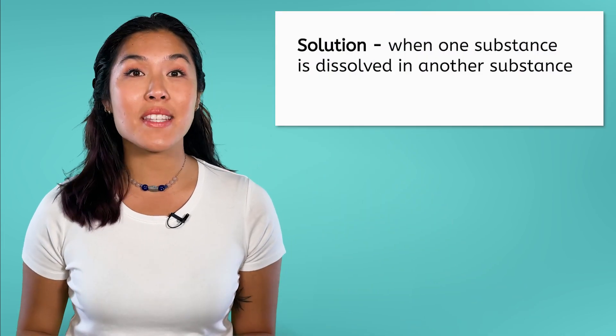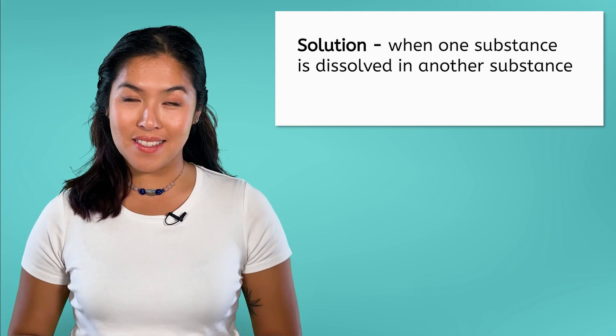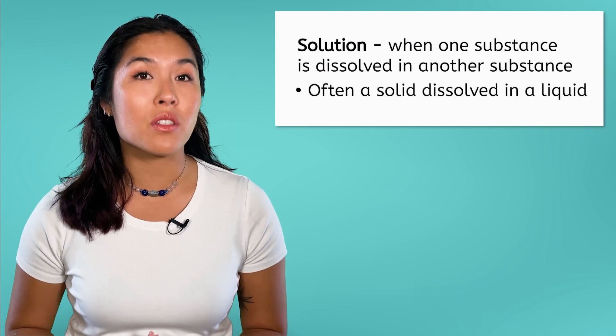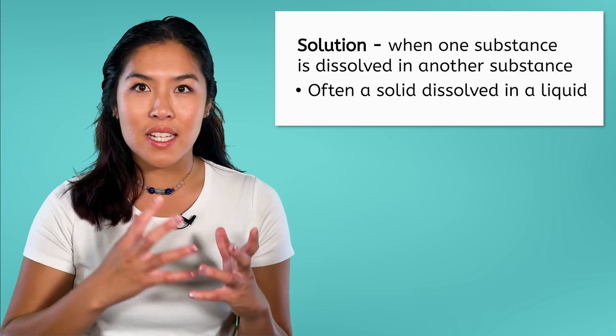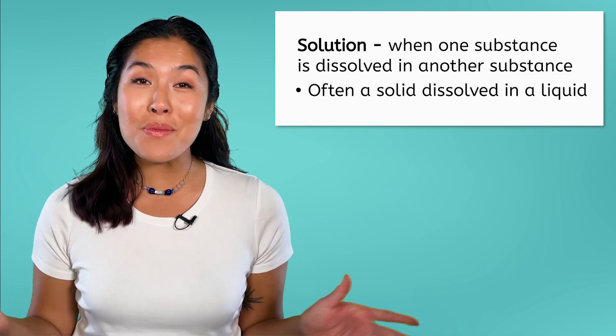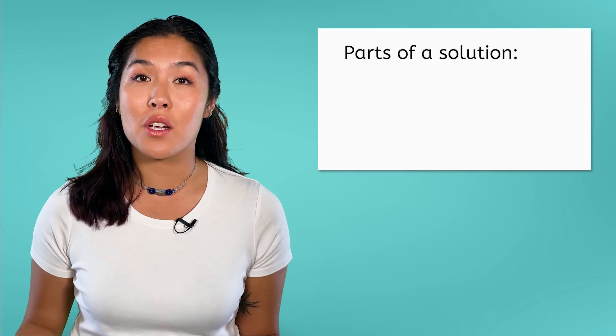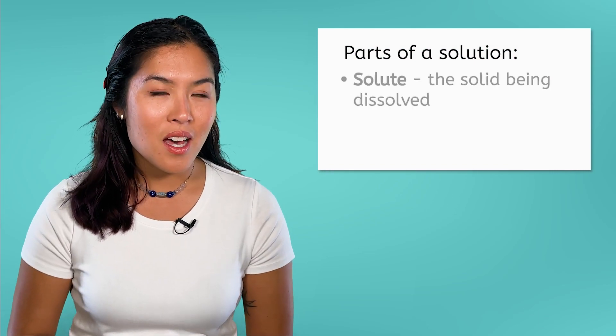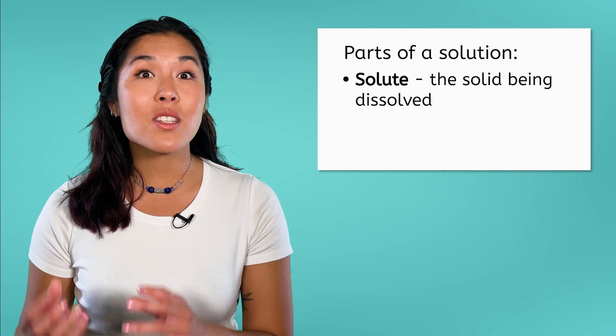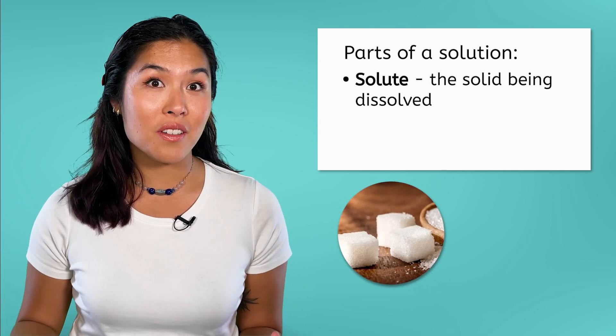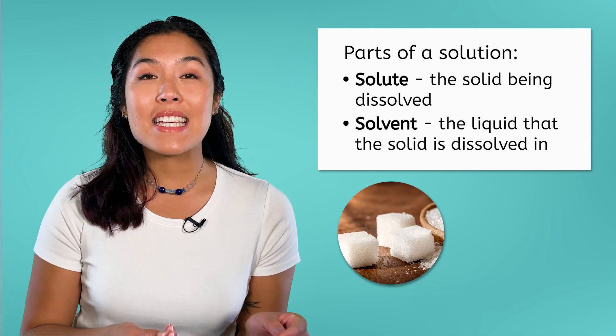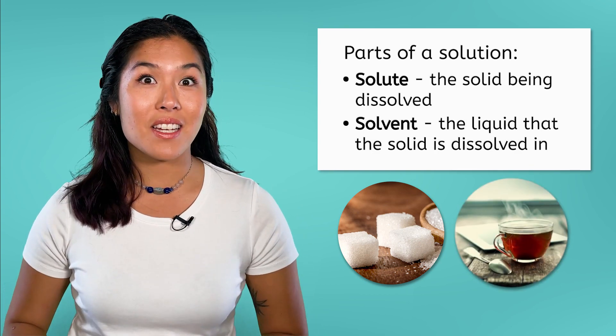We first defined solutions in our unit covering the properties of matter. A solution is when one substance is dissolved in another substance. Usually, we use the term solution to refer to a solid dissolved in a liquid, such as the sugar in my iced tea. When discussing solutions, it is sometimes easier to use key vocabulary words. A solute is the solid being dissolved, such as sugar, and a solvent is the liquid that the solid is dissolved in, such as my tea.